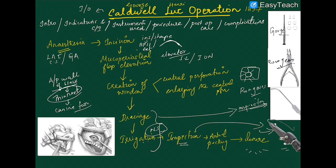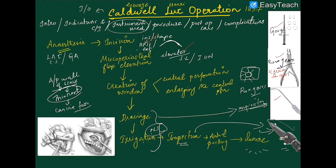From the procedure, you can list the instruments used. First is the BP blade; then elevators for elevating the mucoperiosteal flap; then a gouge and rongeurs — or alternatively Kerrison forceps — for creating the window; an aspirator for drainage; normal saline or other irrigating solutions; a nasopharyngoscope for inspection; antibiotic paste and gauze for antral packing; and suturing materials for final closure.